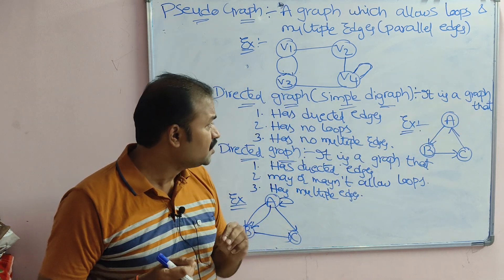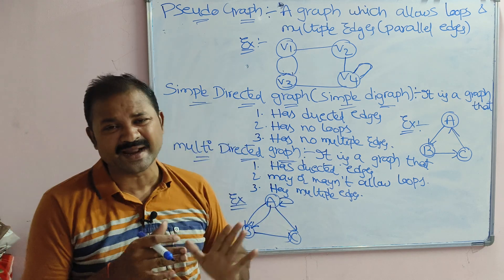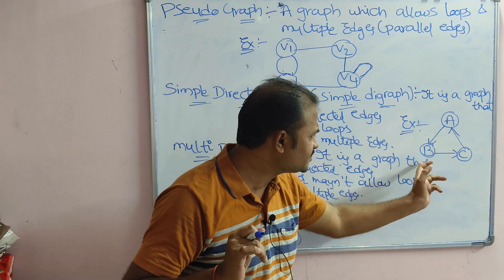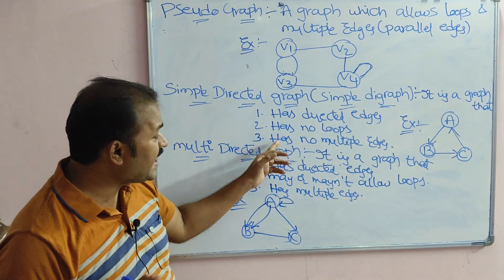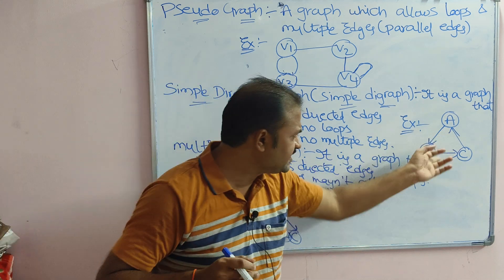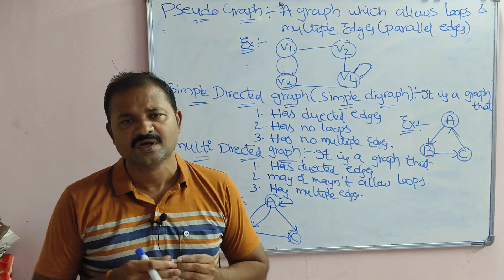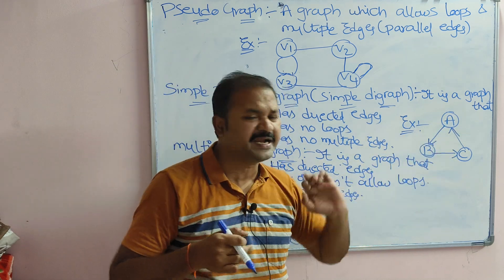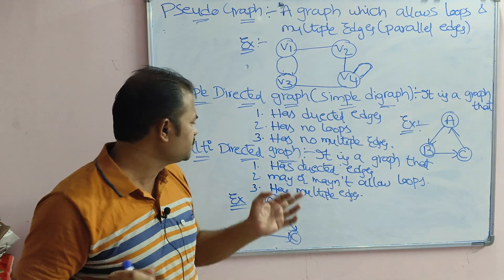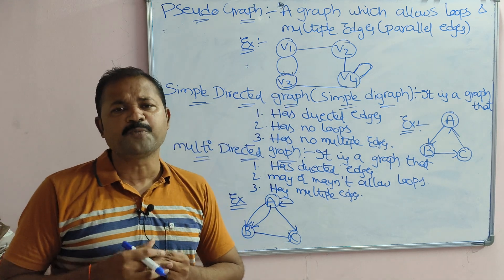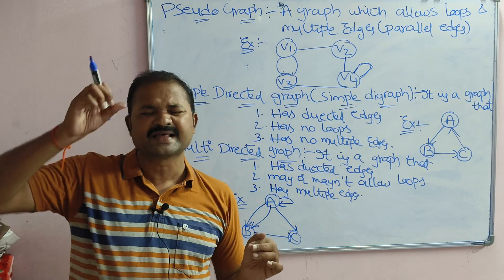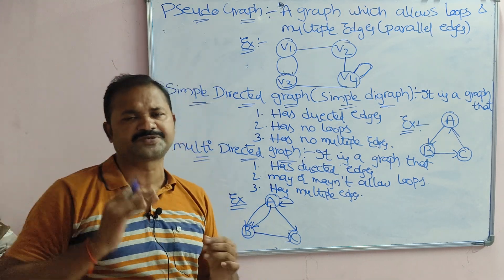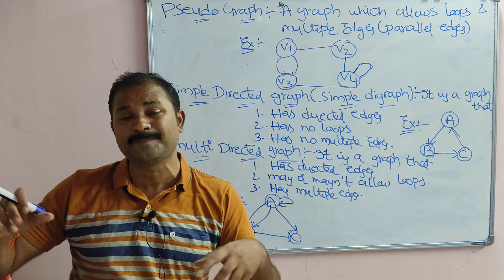A simple directed graph has no loops because it is a simple graph, and a simple graph does not allow any loop. It also has no multiple edges — multiple edges means more than one edge between a pair of vertices, and here we don't have any. So the name itself specifies the meaning: directed graph means edges have direction, and simple graph means there are no loops and no multiple or parallel edges.